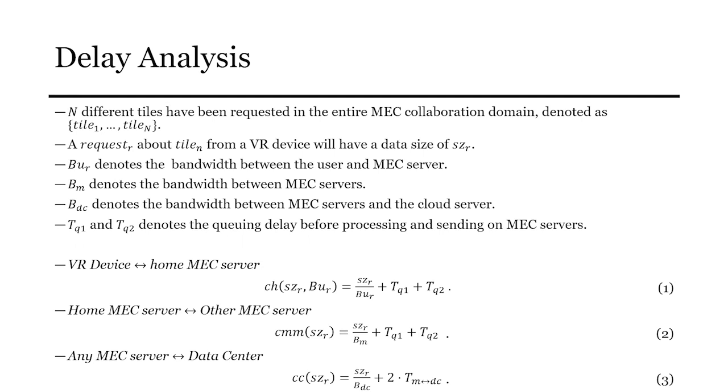To design an ideal caching algorithm, we need to analyze the latency involved in each possible request path. Assume N different tiles have been requested in the entire MEC collaboration domain. A request R about tiles from a VR device will have a data size size R. BUR denotes the bandwidth between the user and the MEC server. BM denotes the bandwidth between MEC servers. BDC denotes the bandwidth between MEC servers and the cloud server. TQ1 and TQ2 denote the queuing delay before processing and sending on the MEC servers. The propagation delay of the following communication process can be negligible because of the short distance.